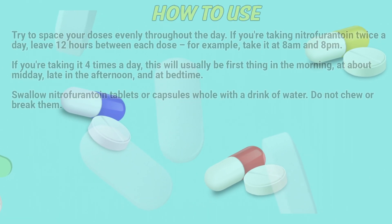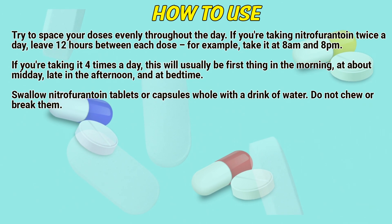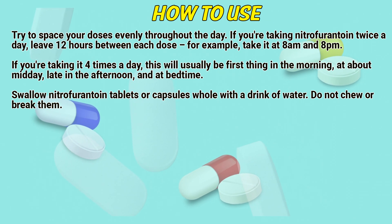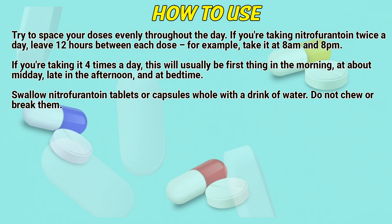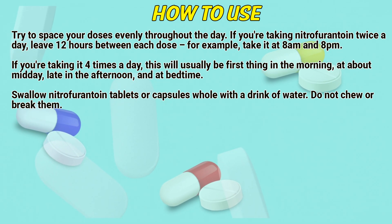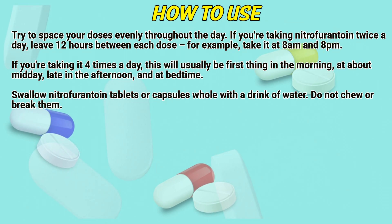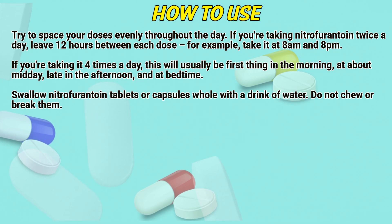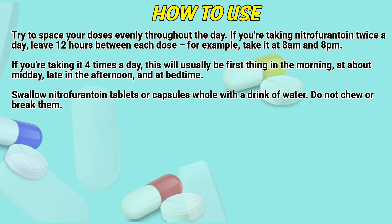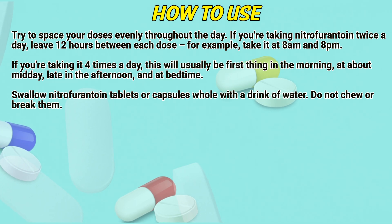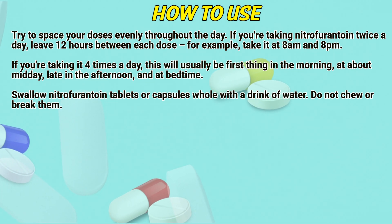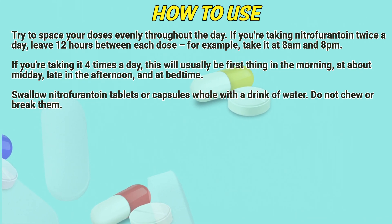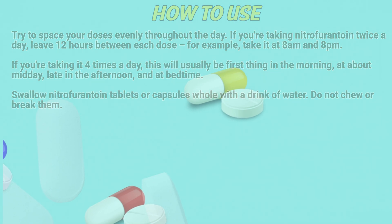Try to space your doses evenly throughout the day. If you are taking nitrofurantoin twice a day, leave 12 hours between each dose — for example, take it at 8 am and 8 pm. If you are taking it four times a day, this will usually be first thing in the morning, at about midday, late in the afternoon, and at bedtime. Swallow nitrofurantoin tablets or capsules whole with a drink of water; do not chew or break them.